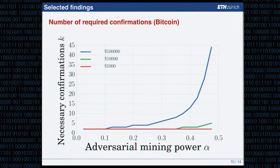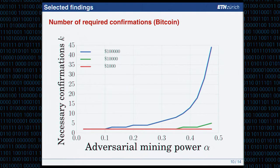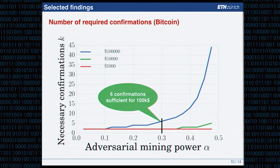Another finding is the number of required confirmations in Bitcoin, plotted against adversary mining power on the x-axis and the necessary block confirmations on the y-axis. We consider three transaction values: $1,000, $10,000, and $100,000. For example, six confirmations are sufficient for $100,000 transactions in Bitcoin, and for most transactions you may not need to wait six confirmations.